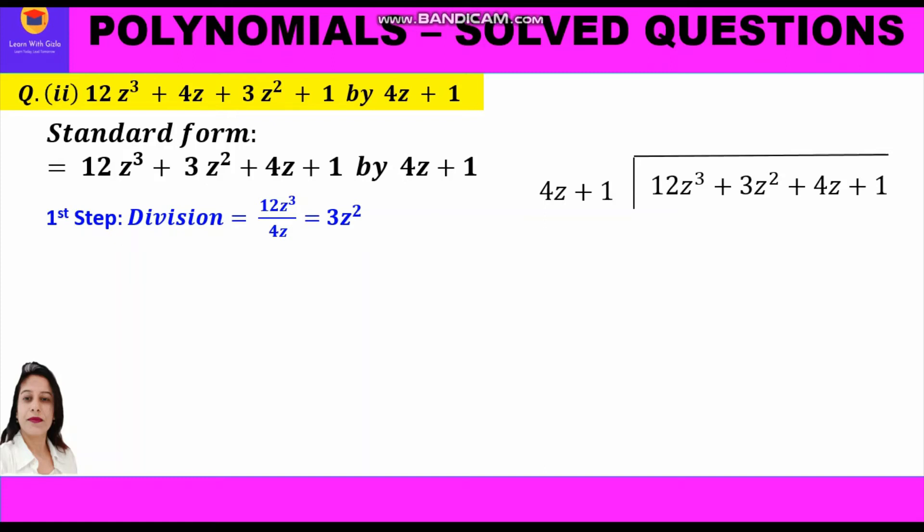We take up the first term of the dividend and divide it by the first term of the divisor, so 12z³ upon 4z equals 3z². This is our quotient, which we write on top. Another way to find 3z² is to think: what number should be multiplied to 4z to get 12z³?